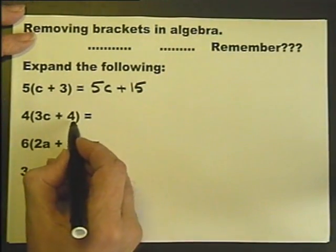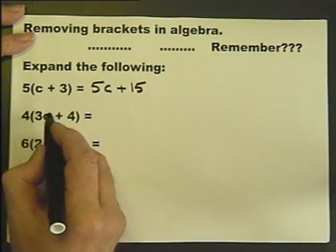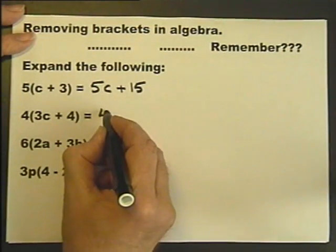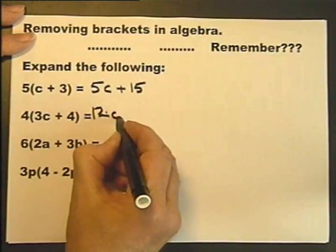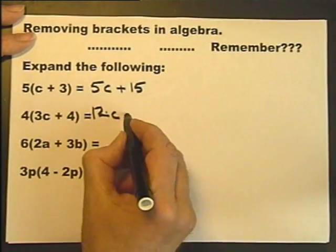So in this case, I multiply the 3C by 4, and 4 3s are 12, so 4 3Cs are 12C. And 4 plus 4s are plus 16.